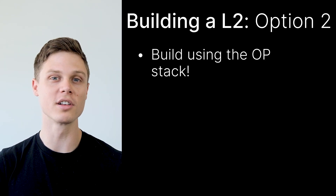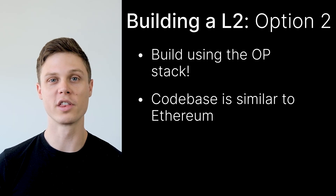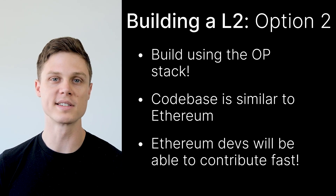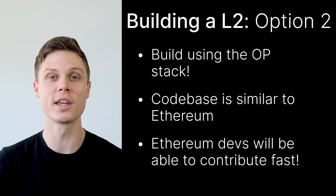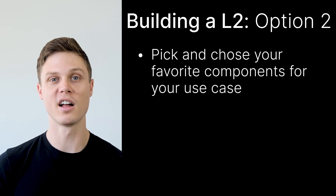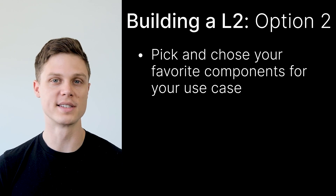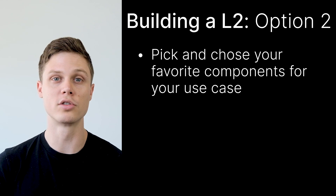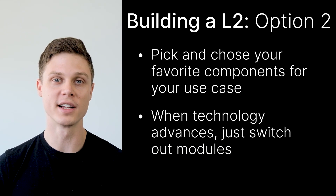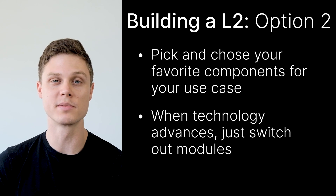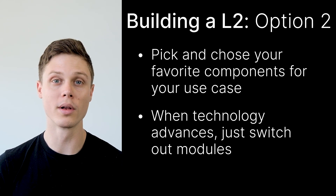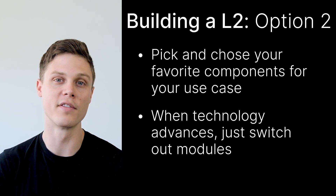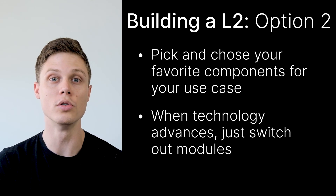Alternatively, you could build your layer 2 using the OP stack. The codebase for the OP stack is already very similar to the codebase for Ethereum, so any experienced Ethereum developer will be able to jump in and start working on your project. Because there is a set of modular components for each layer in the OP stack, you can pick each of these components and combine them together to form the perfect layer 2 network for your use case. As crypto technology advances, you may need to switch out some of these modules for newer ones, but there will likely be a whole community of OP stack developers constantly incorporating the state of the art into new modules.